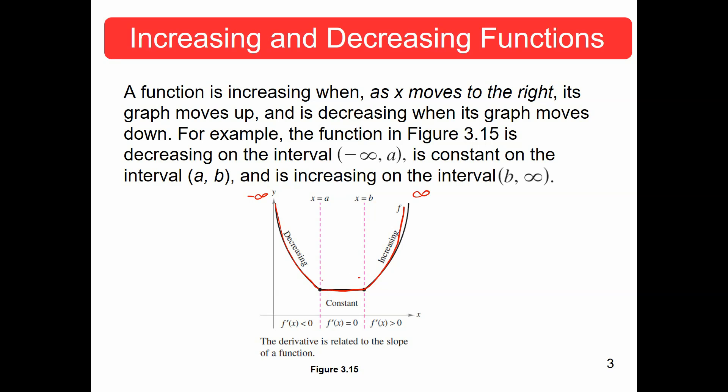Now, think about what the derivative of each of these things is. The derivative is just the slope of the tangent line. What can we say about all of these tangent lines in the decreasing region? They all have a negative slope, which means that the derivative is less than zero.